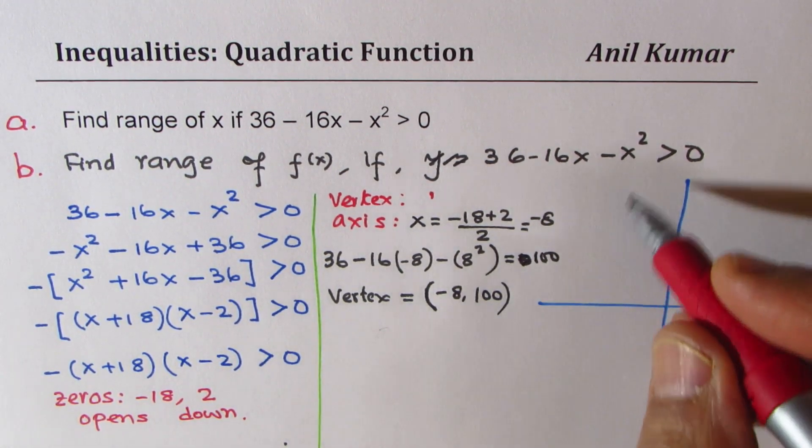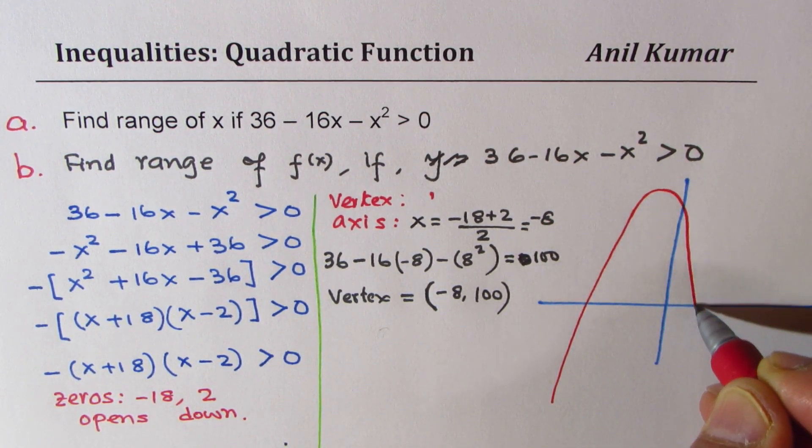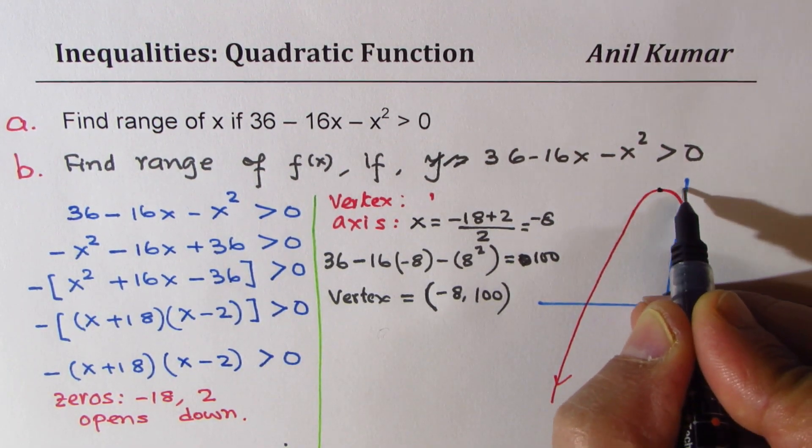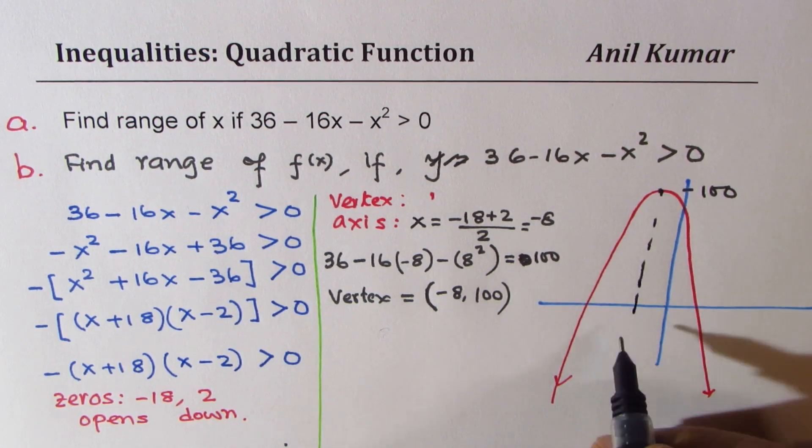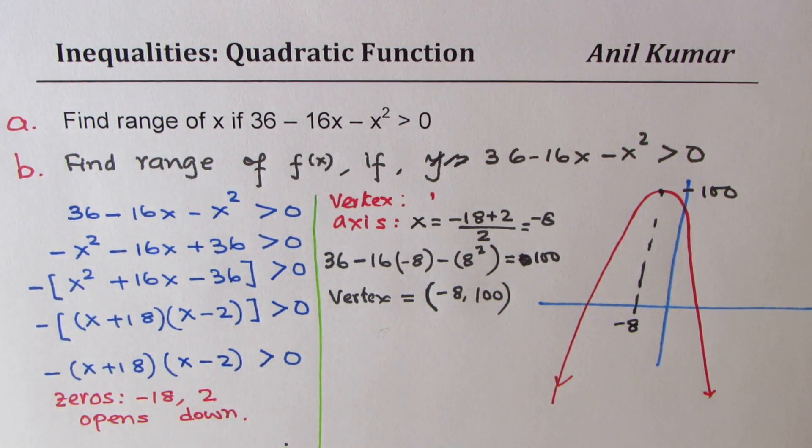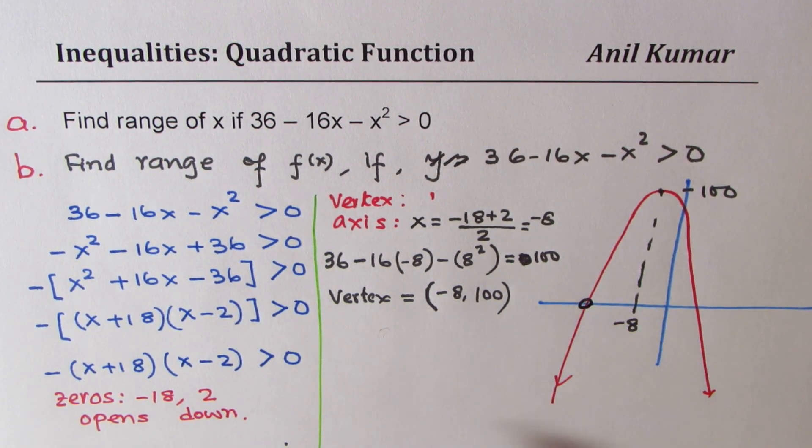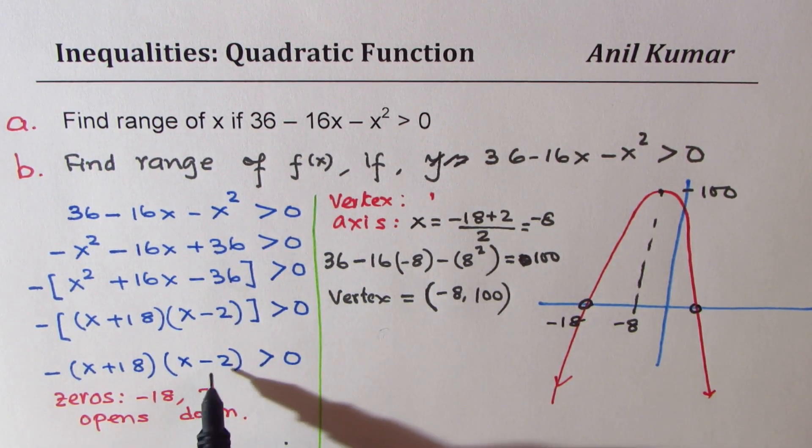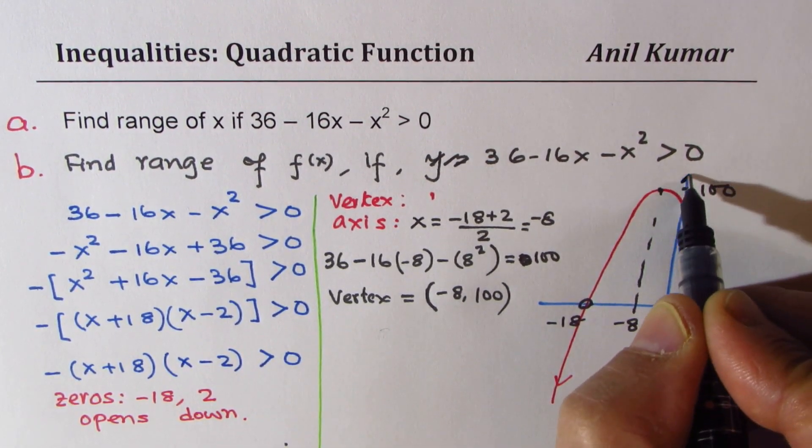So if I have to sketch this, I could sketch a parabola like this. Not to scale, but anyway. We can say that this point here is at y equals 100 and x value at minus 8. The x-intercepts are at minus 18 and at plus 2. That is the graph which can help us write down the solution.